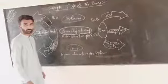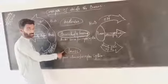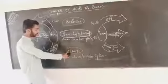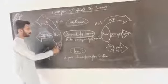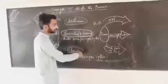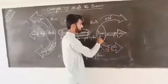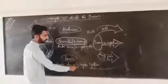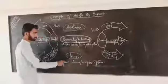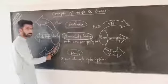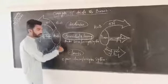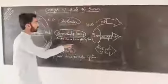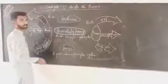The third concept of acids and bases is the Lewis concept of acids and bases. According to Lewis, the substances that accept pairs of electrons are called acids, while the substances that donate pairs of electrons are called bases. This concept is also known as the electron pair donor and acceptor system. Simply, the substances that are acceptors of electron pairs are called acids, while the substances that are donors of electron pairs are called bases.